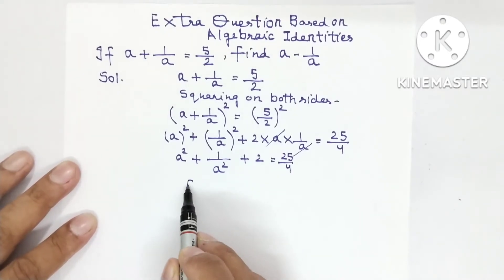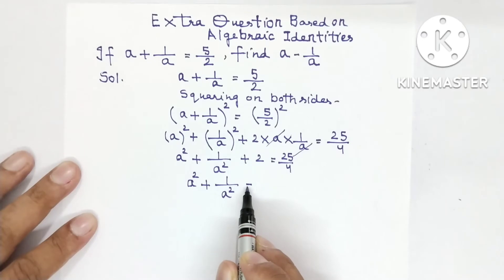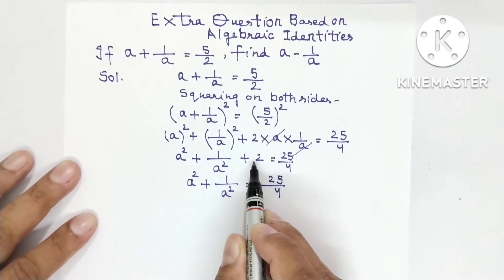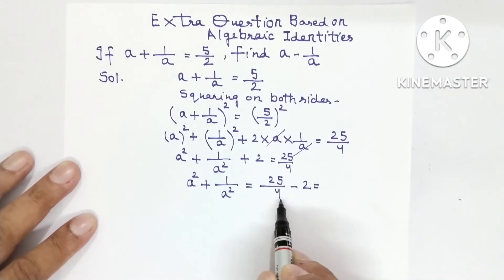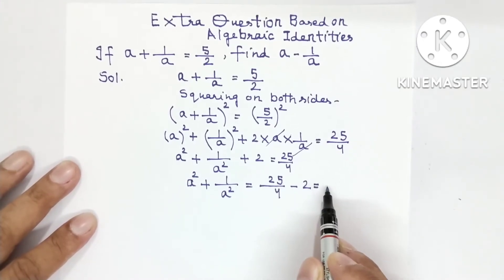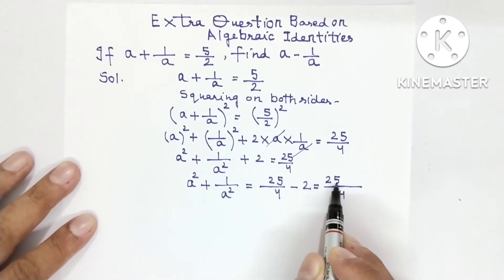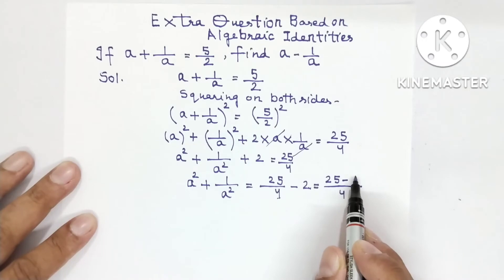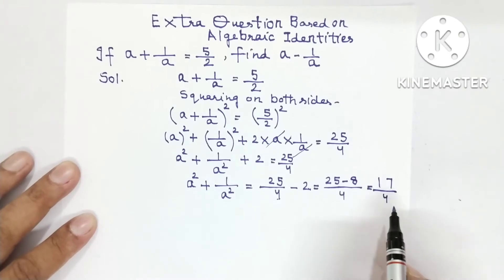So we will find from here a² + 1/a² = 25/4 - 2. LCM is 4. So this way 25 will remain 25 minus 4 × 2 = 8. So 25 - 8 = 17. 17/4.